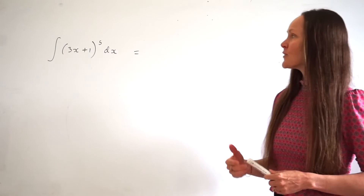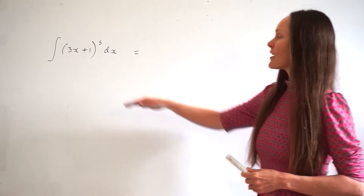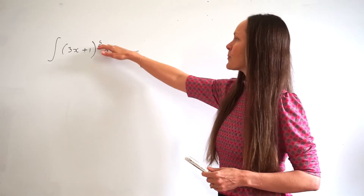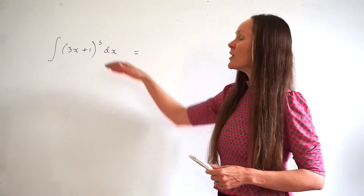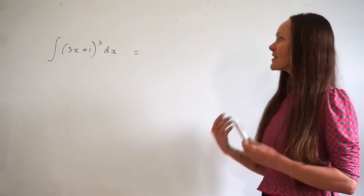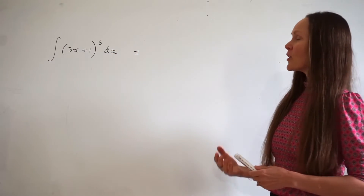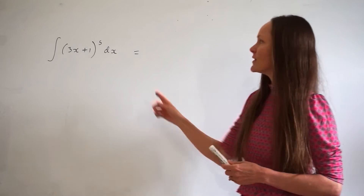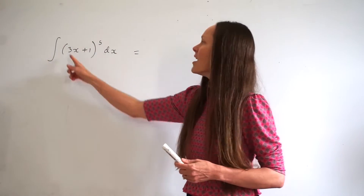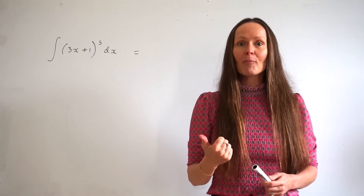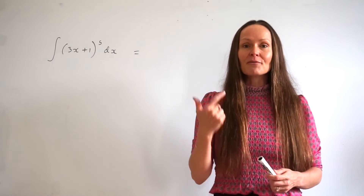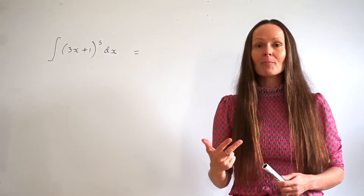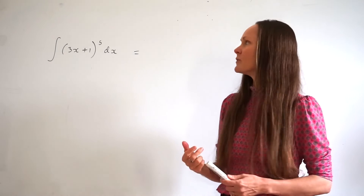Hey guys, in this question we're going to integrate 3x plus 1 raised to the power of 5 with respect to x. The steps you need to follow when integrating an expression of this form are to increase the power by 1, divide by the new power, and divide by the coefficient of x.